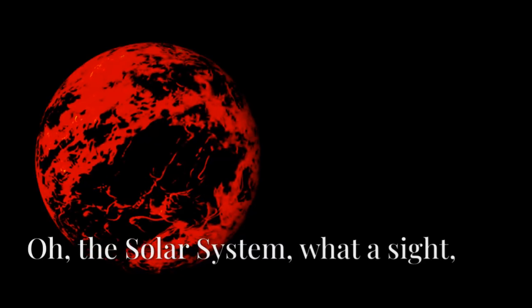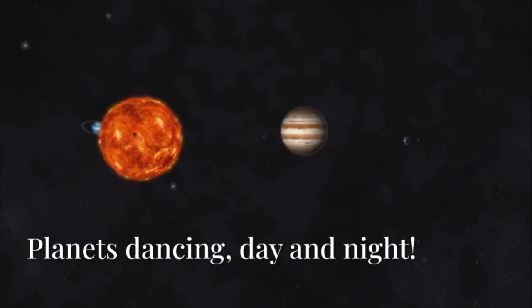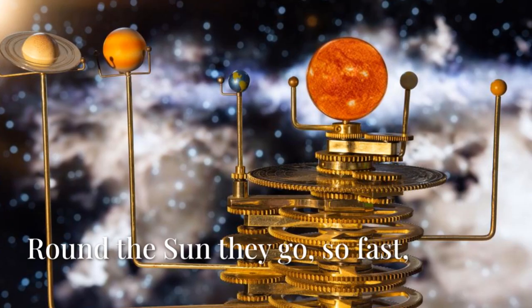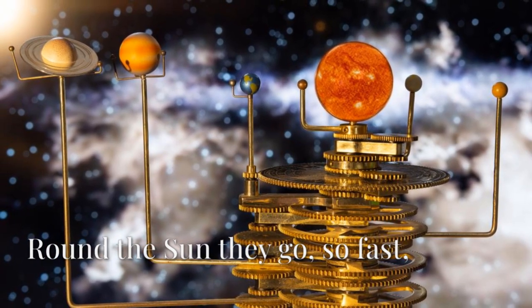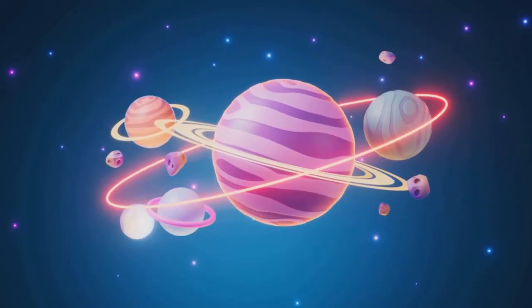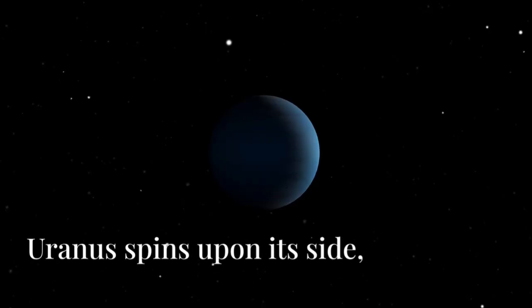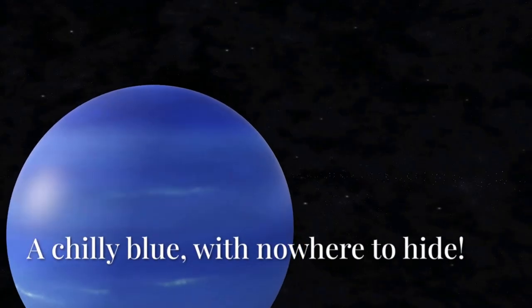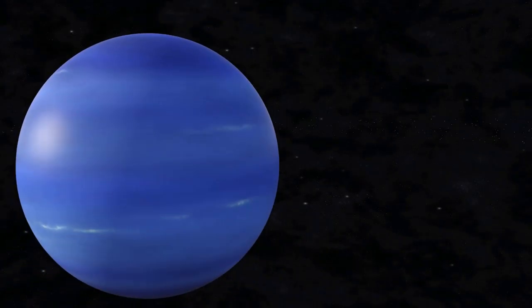Oh, the solar system, what a sight! Planets dancing day and night. Round the sun they go so fast, our cosmic home, built to last. Uranus spins upon its side, a chilly blue with nowhere to hide. And last is Neptune far away.